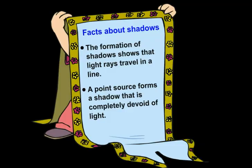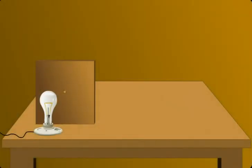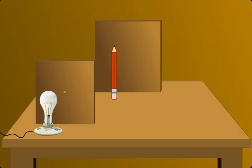Let's discuss it in some detail. Look at this setup. There is a bulb, and there is a cardboard with a small hole, and there is a pencil, and here you have the screen. Now why do you think we have a small hole?